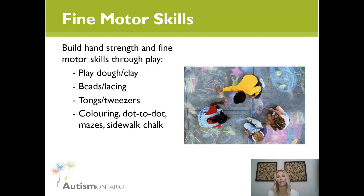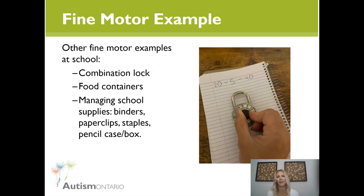More information on fine motor skills is available in the resource section, including an Autism Ontario webinar series. For older students, fine motor skill practice might look like unlocking a combination lock — you can make it motivating by putting something fun inside. Other skills to practice include managing food containers, opening and closing binders, using paper clips or staples, and opening and closing a pencil case or pencil box.